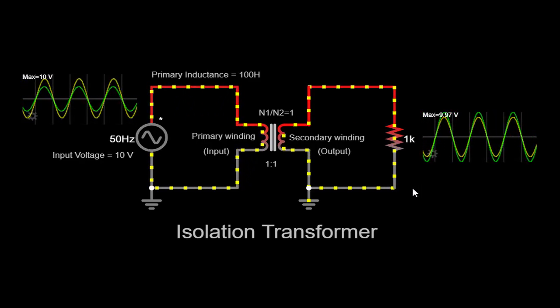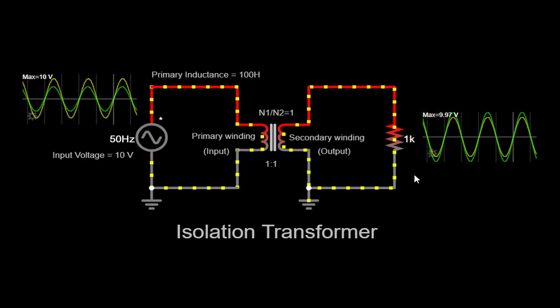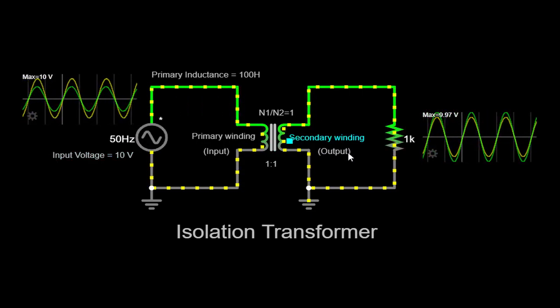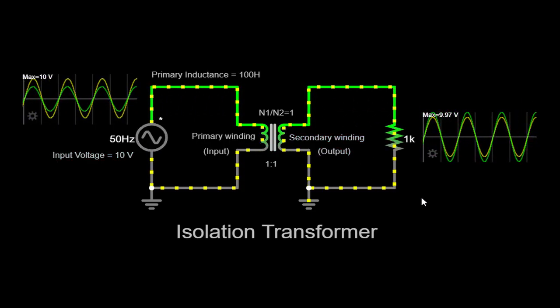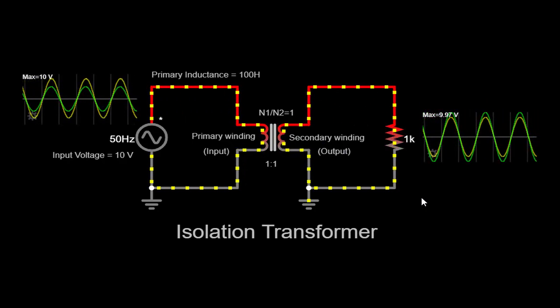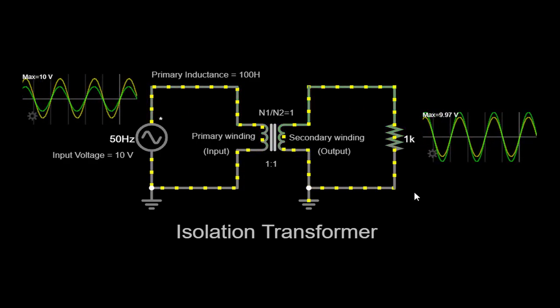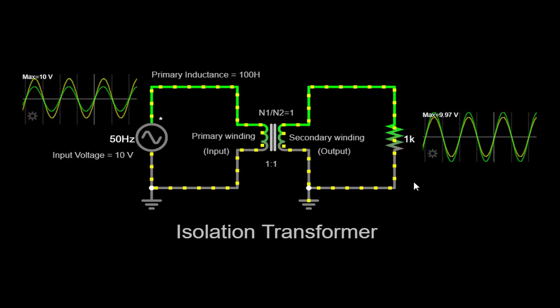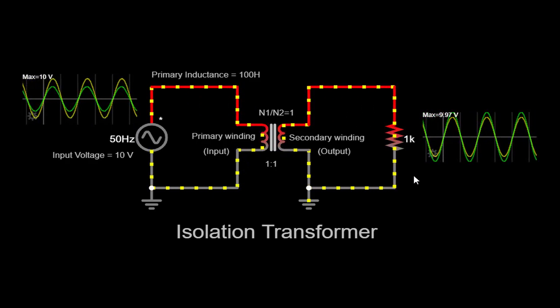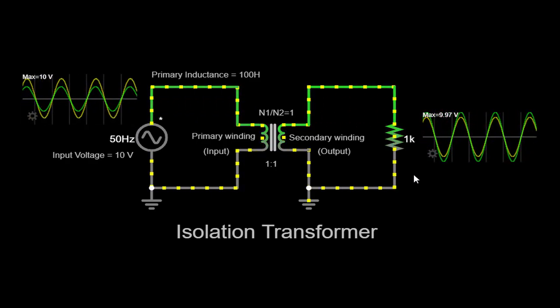Electrical isolation: The primary purpose of an isolation transformer is to provide electrical isolation between the input and output circuits. By maintaining this isolation, the transformer ensures that any electrical faults or disturbances on the input side do not affect the output side. This protection is vital in sensitive applications and helps prevent damage to equipment and ensures the safety of individuals.